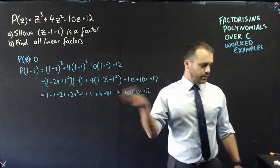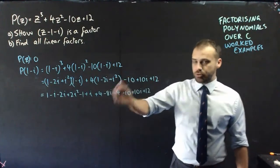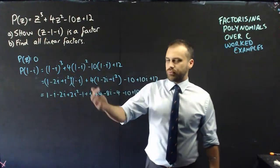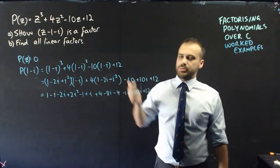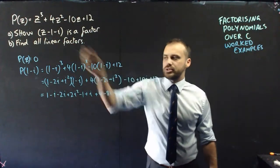Alright, let's expand this further. Now, again, I do understand this is getting pretty hectic, but remember, we're aiming for 0. If we don't get 0, then the question must be broken somehow because we know that this is supposed to be a factor.